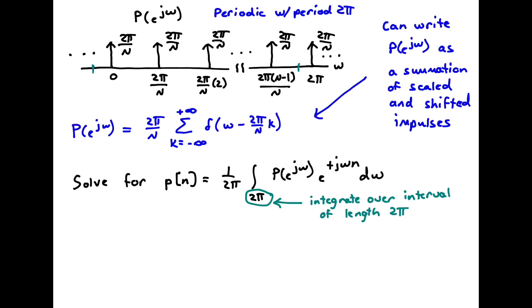Here's the diagram showing P(e^jω), copied from the previous slide — it is periodic with period 2π. We can represent P(e^jω) via this analytical formula: it's simply an infinite summation of scaled and shifted impulses. The area of each impulse is 2π/N, which can be pulled out of the summation. The impulses are located at multiples of 2π/N — one at zero, one at 2π/N, 4π/N, and so on.